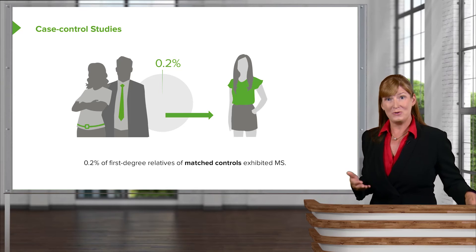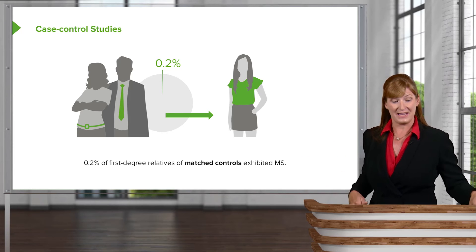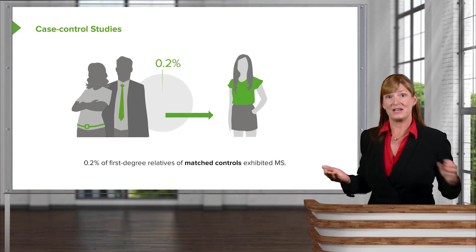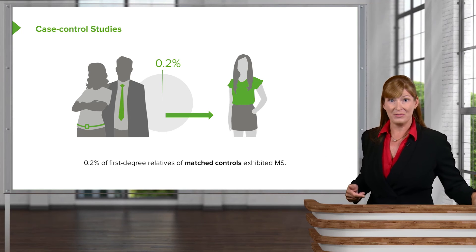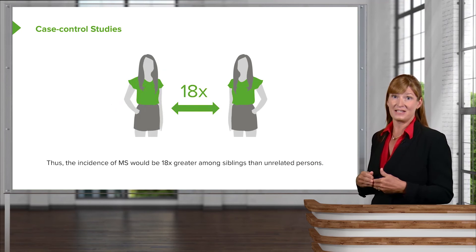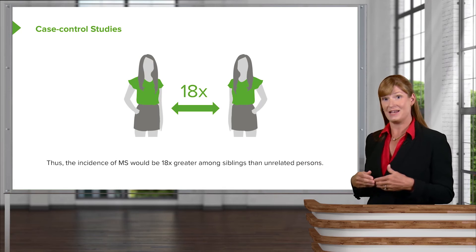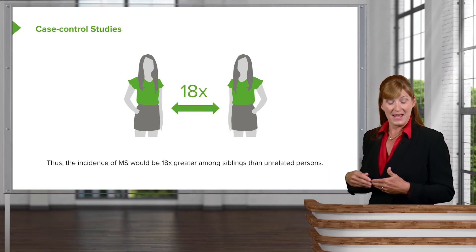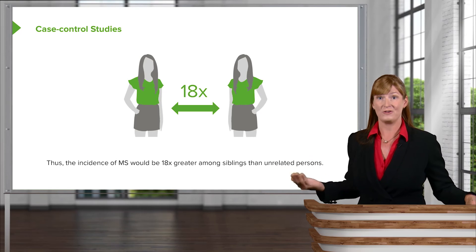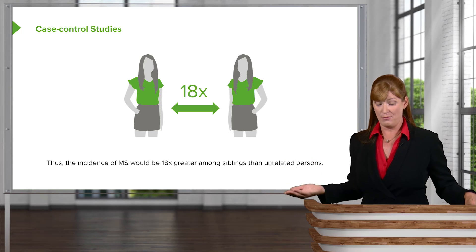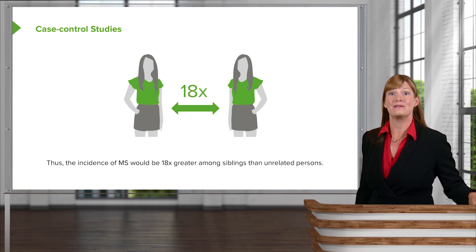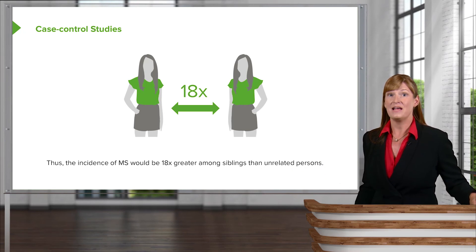In the case of multiple sclerosis, 3.5% of people with multiple sclerosis are likely to have first-degree relatives — such as siblings — who also have it, compared to only 0.2% in the matched control group of married couples. Using those two statistics, we can say the incidence of multiple sclerosis is 18 times greater among siblings or first-degree relatives than among unrelated persons.